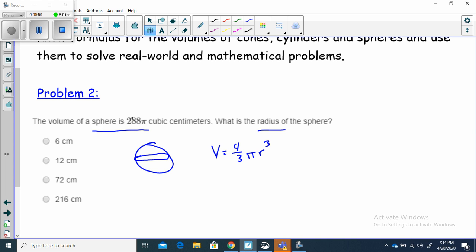They told us the volume is 288π. So let's plug that in for volume. 288π is equal to 4/3 times πr³. Well, I have π on both sides. So can I divide both sides by π and get rid of π? See, it cancels here, it cancels here. This gives me 288. 288 is equal to 4/3 times r³.